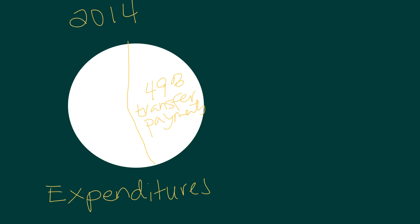Here is a pie chart of federal government expenditures from 2014. Almost half the budget is for transfer payments — that includes all the entitlements: Social Security, Medicare, Medicaid, and Obamacare payments. Basically half our spending budget is kind of off limits. When they call them entitlements, it means Congress has set it up so that this spending is going to happen — it's not something up for debate.